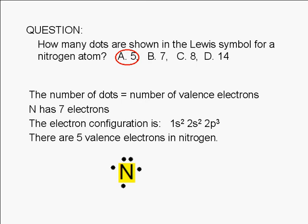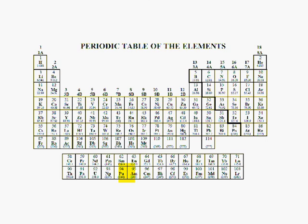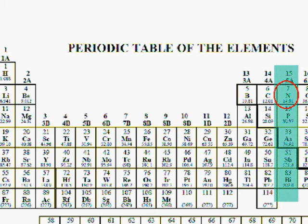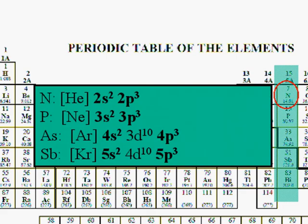We can easily figure out the answer to this question by referring to the periodic table. In the periodic table, the elements are arranged so that the group number is equal to the number of valence electrons. We can see that nitrogen belongs to group 5A. Therefore, a nitrogen atom has 5 valence electrons.